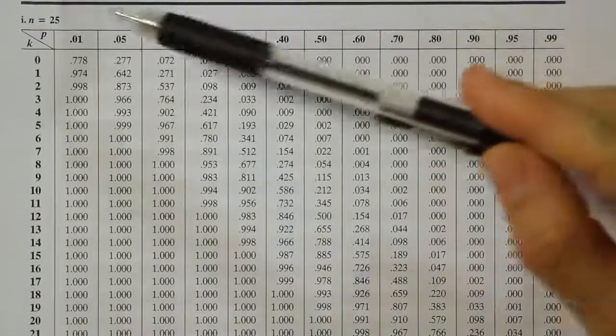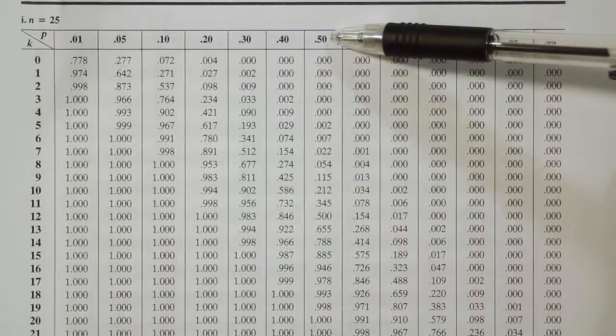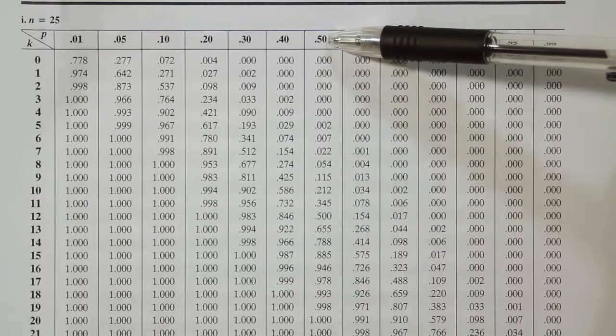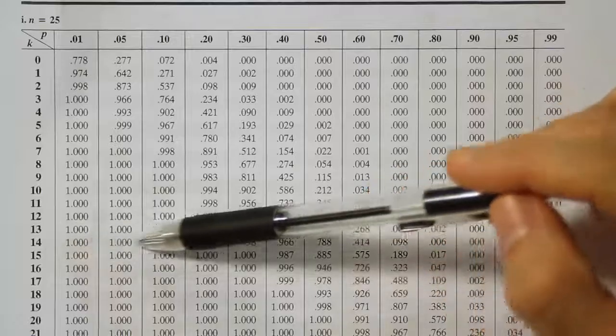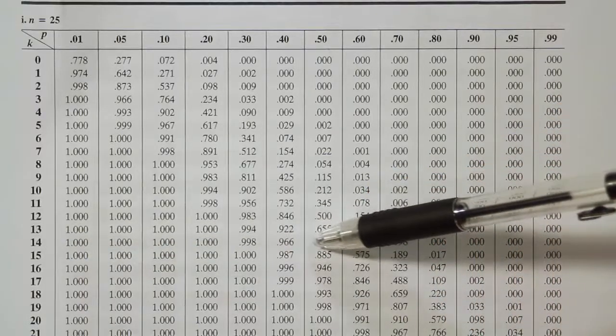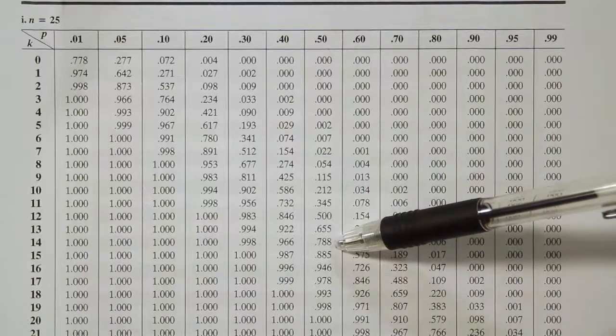We're on the binomial table where n is 25. We're looking in the 0.5 column and we want to go down to where k is equal to 14. So k equals 14, over to where the 0.5 column is, and we get the answer 0.788.